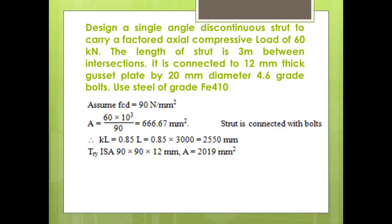And it has to resist a load of 60 kilonewtons. So area of the section required comes to be 666.67 mm square. Now we have to find a section with this particular area.